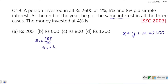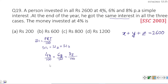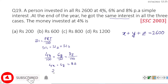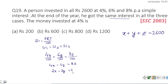Setting up the equations: SI at 4% equals SI at 6% equals SI at 8%. Let the amounts be x, y, z. This gives: 4x = 6y = 8z, which simplifies to 2x = 3y = 4z.